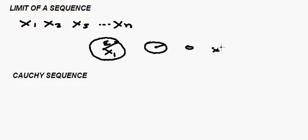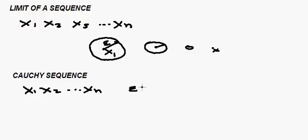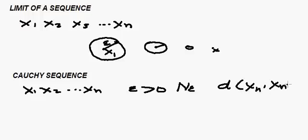Next, let's talk about what is meant by a Cauchy sequence. A Cauchy sequence is again a sequence X₁, X₂, all the way to Xₙ, and we say that it's a Cauchy sequence if for every positive epsilon greater than zero, we have a neighborhood — everything inside the circle is the neighborhood for that given epsilon — such that the distance between Xₙ' and Xₙ'' is less than epsilon.